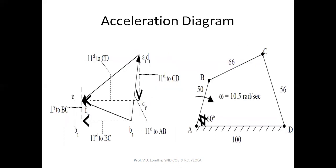Now we will see the acceleration polygon. This is the configuration diagram as already shown. The acceleration diagram is drawn similarly to the velocity polygon, except there will be two components for most links. Initially, from the configuration diagram, plot the fixed points A and D. For link AB, since it moves with uniform angular velocity, there is only the radial component, which is parallel to AB and acting towards the center of rotation at point A. So you will directly get point b as the radial component for link AB.